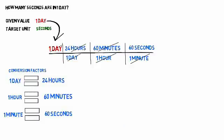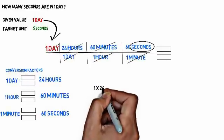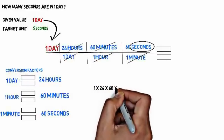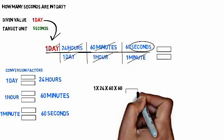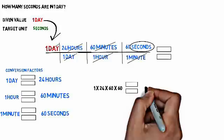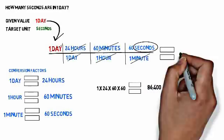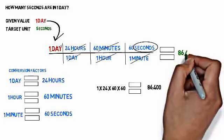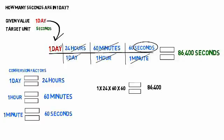We're left with our target unit, seconds. Now we solve by multiplying everything through: 1 times 24 times 60 times 60, which equals 86,400. So the answer is 86,400 seconds in one day.